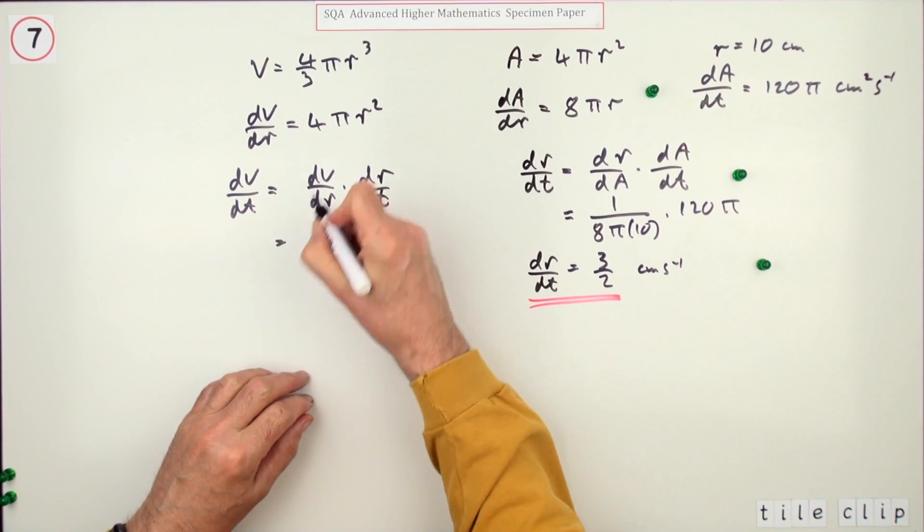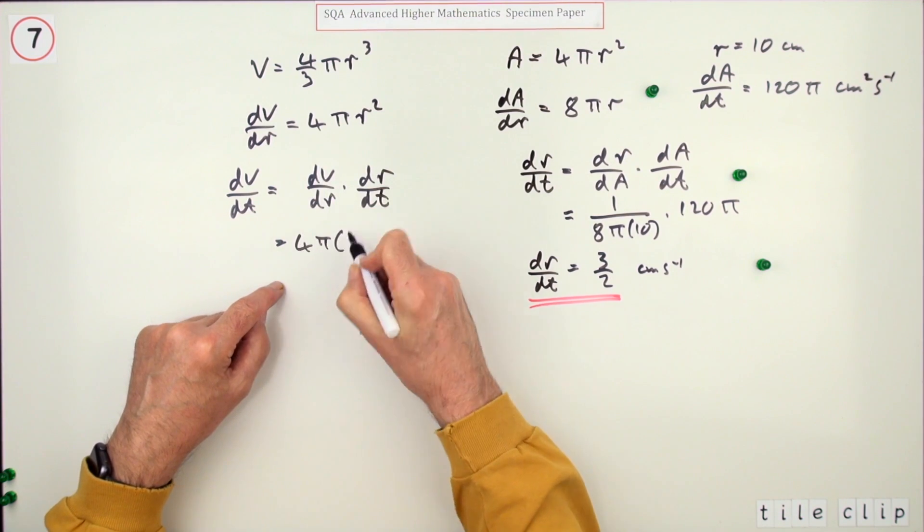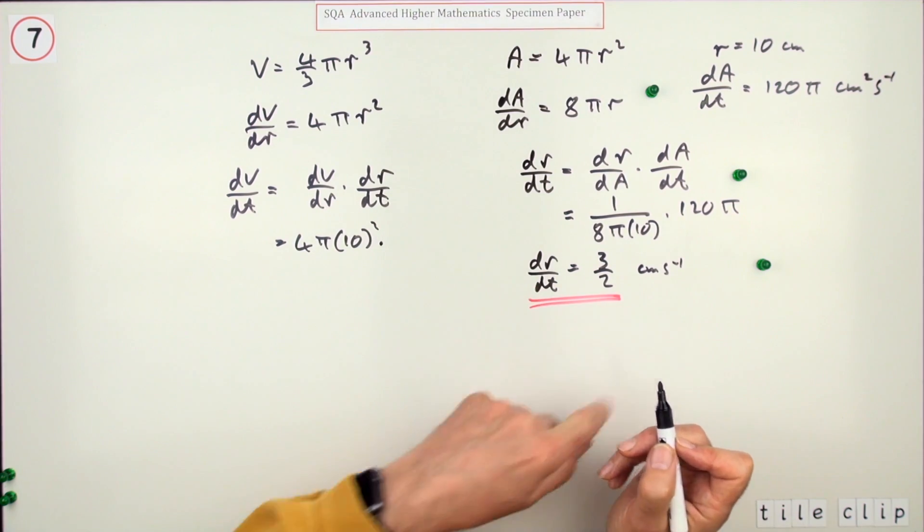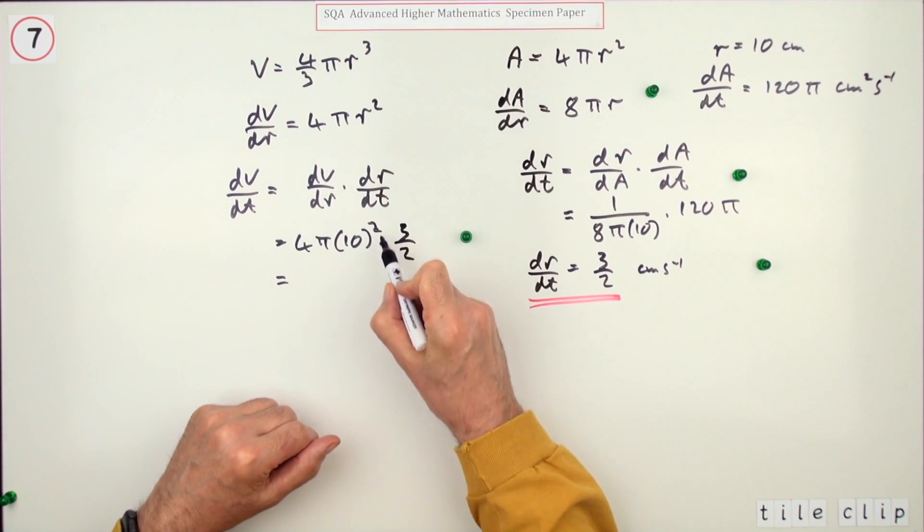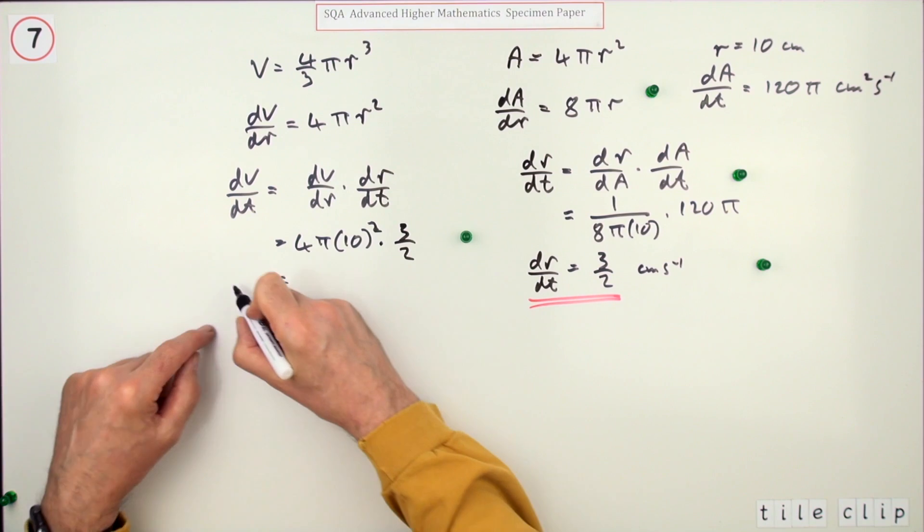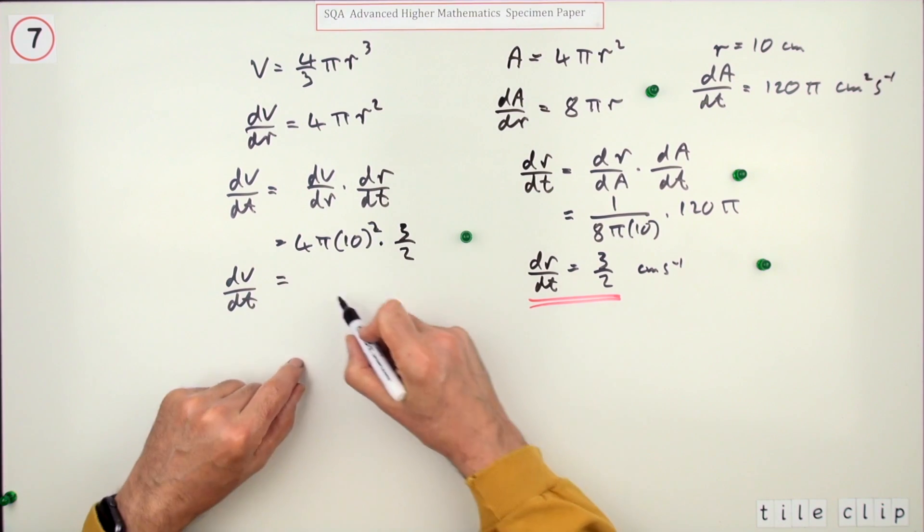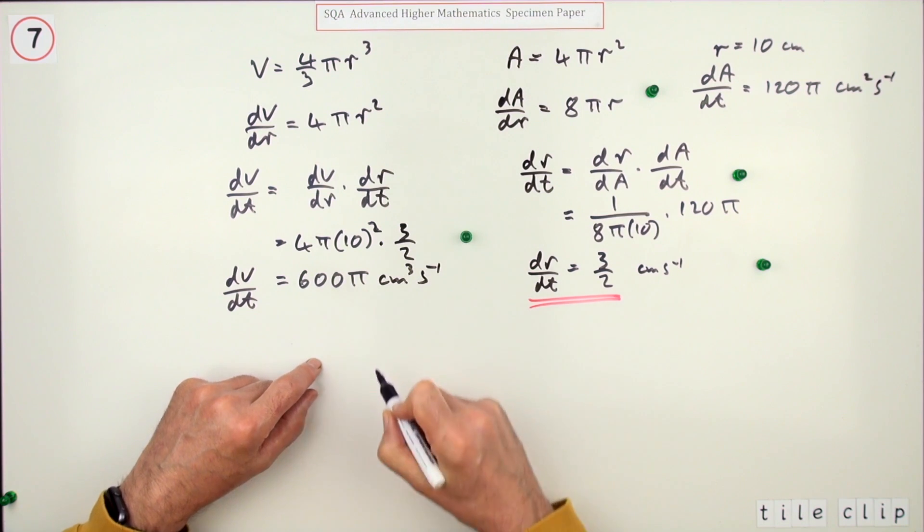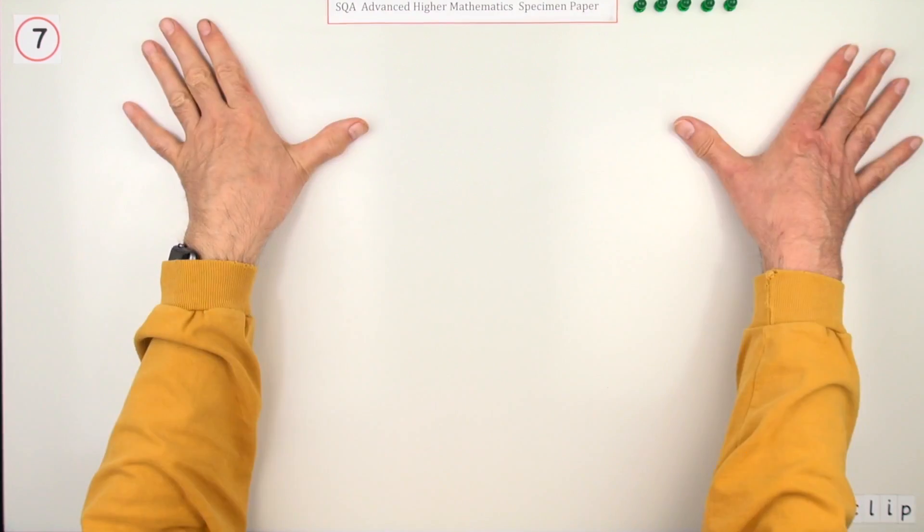Now I can find dV/dt. It's dV/dr times dr/dt, which is 4πr² times dr/dt = 4π(10²) times 3/2. That's worth a mark for the rearrangement. The last mark is putting it all together: 4π times 100 times 3/2 = 600π cm³ per second.